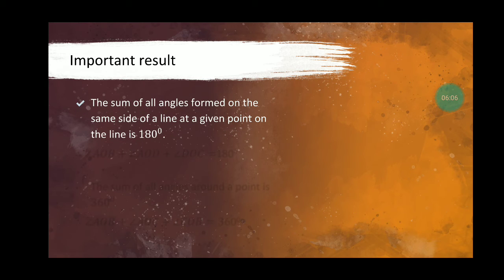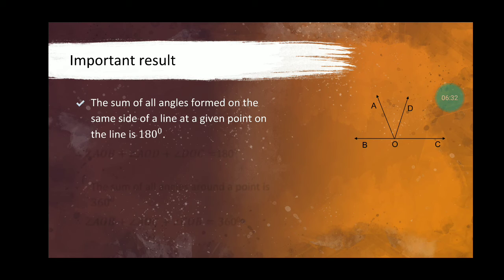Another important result: the sum of all angles formed on the same side of a straight line at a given point on the line is 180 degrees. In the figure, angles AOB, AOD, and DOC are formed — three angles on one side. Whether there are 2, 3, or 4 angles formed on a linear pair, their sum is always 180 degrees. Therefore, angle AOB plus angle AOD plus angle DOC equals 180 degrees.